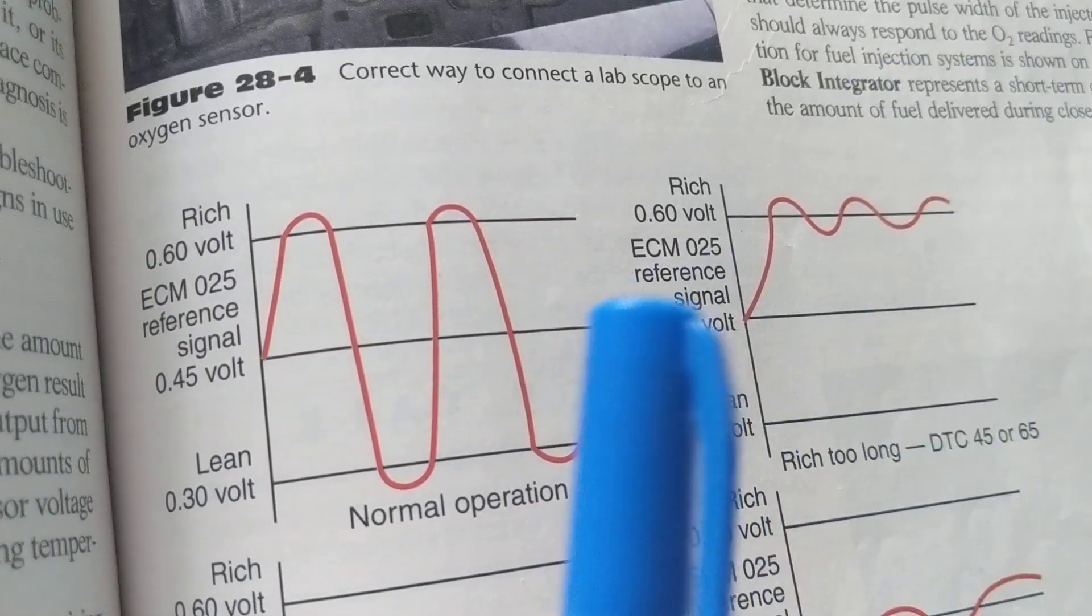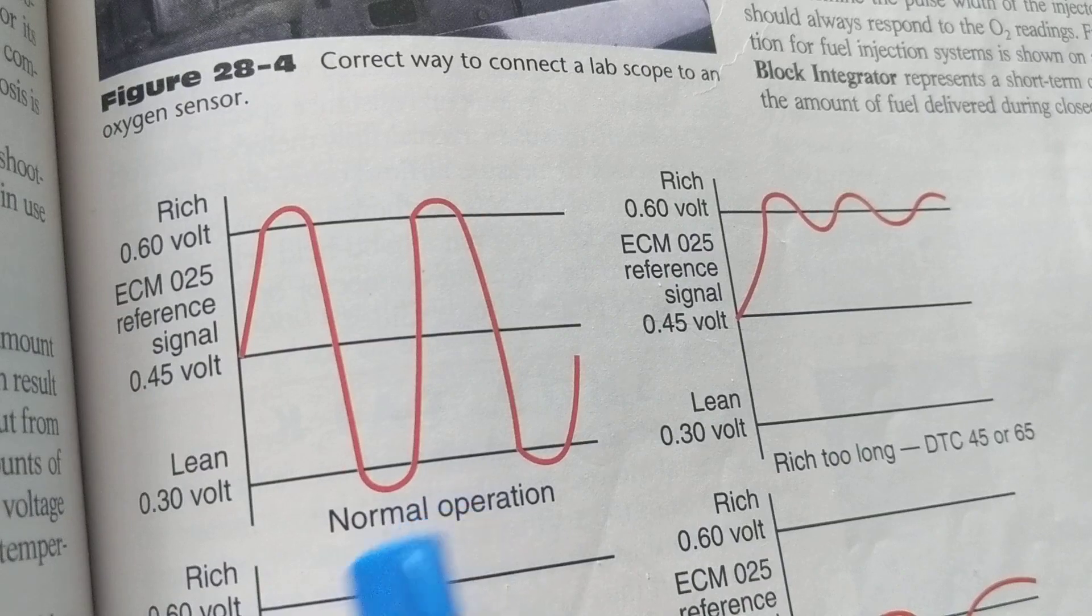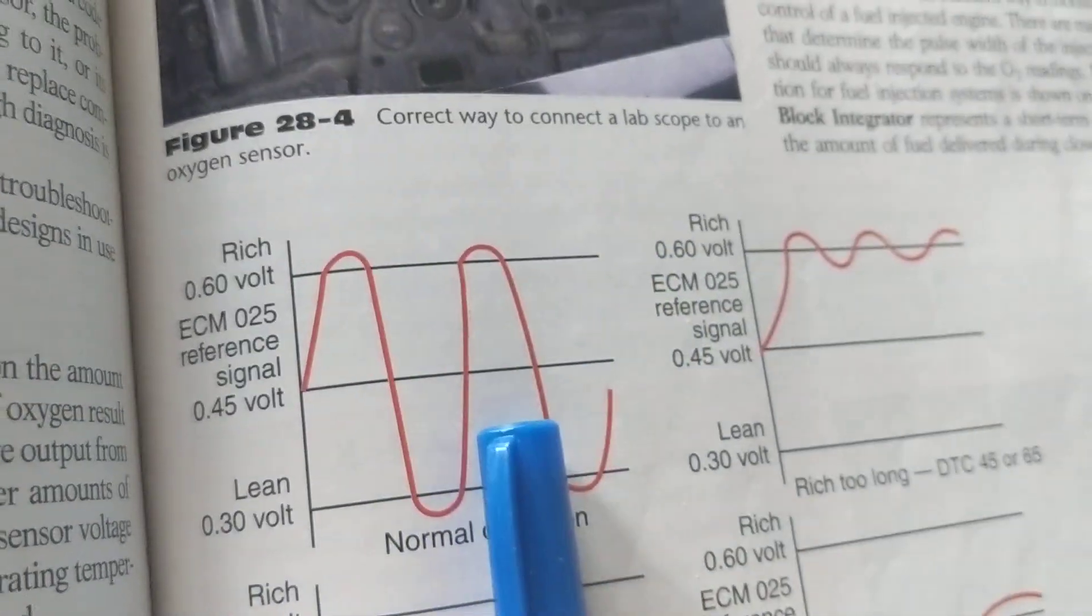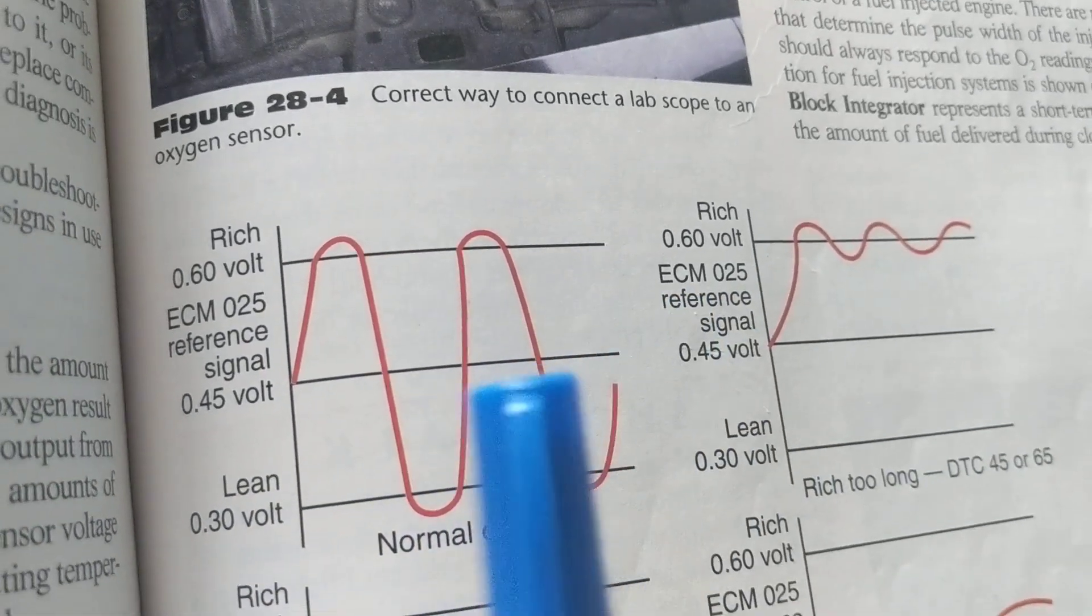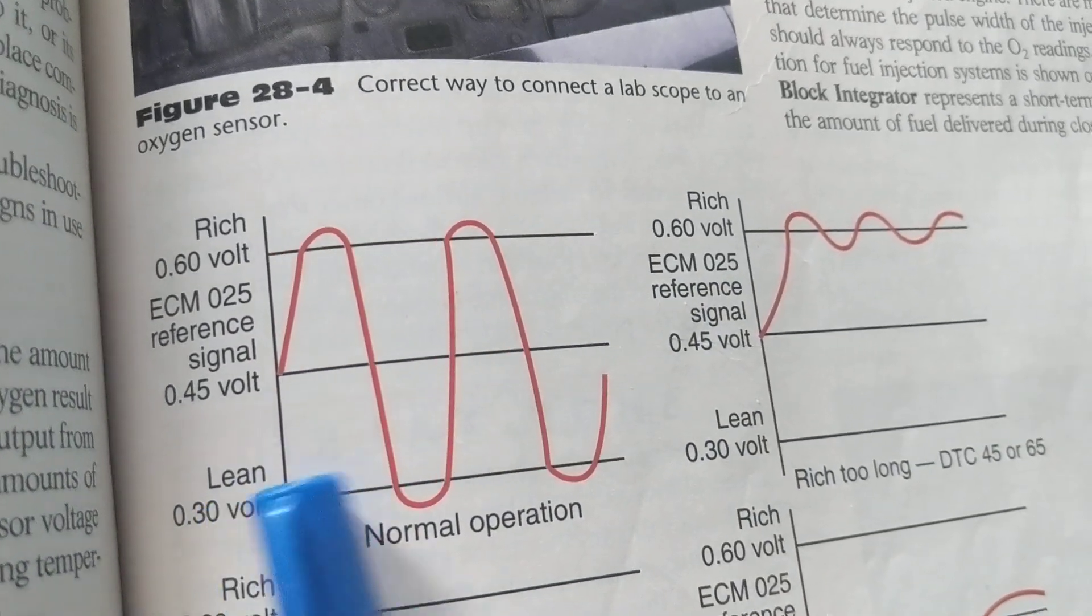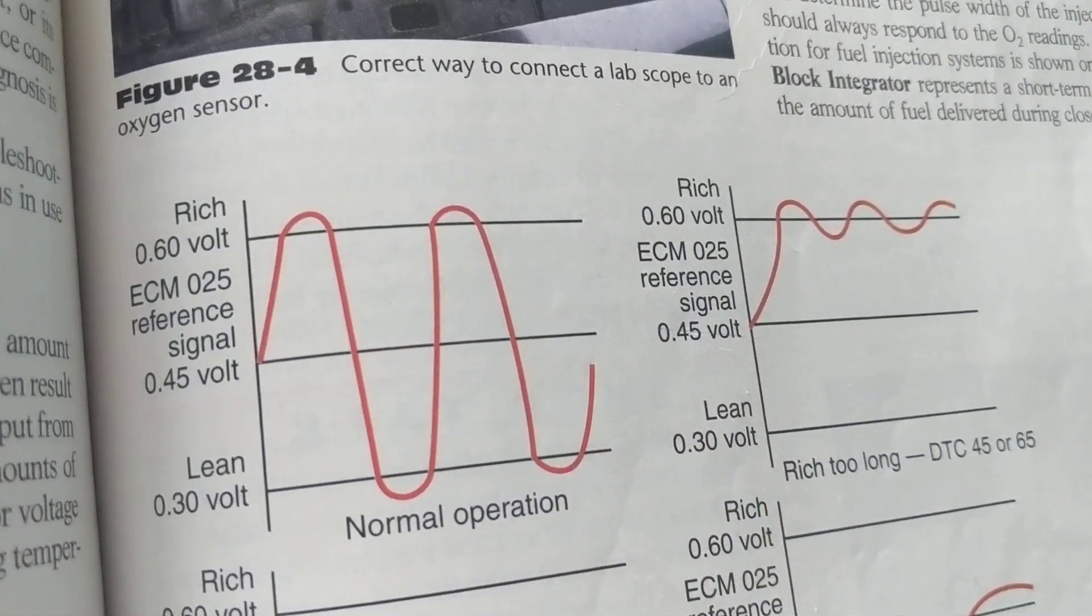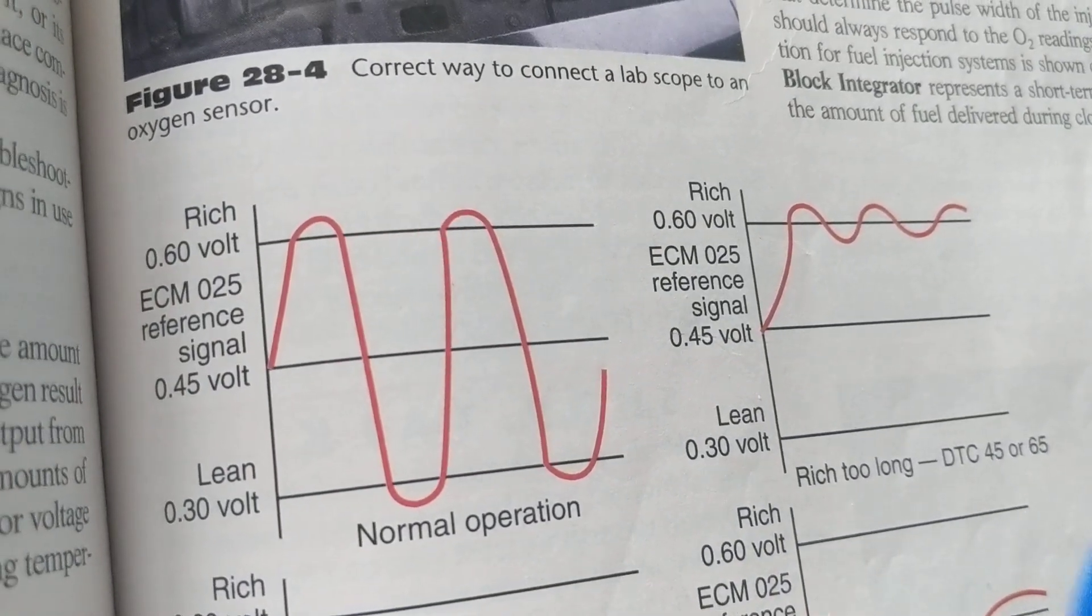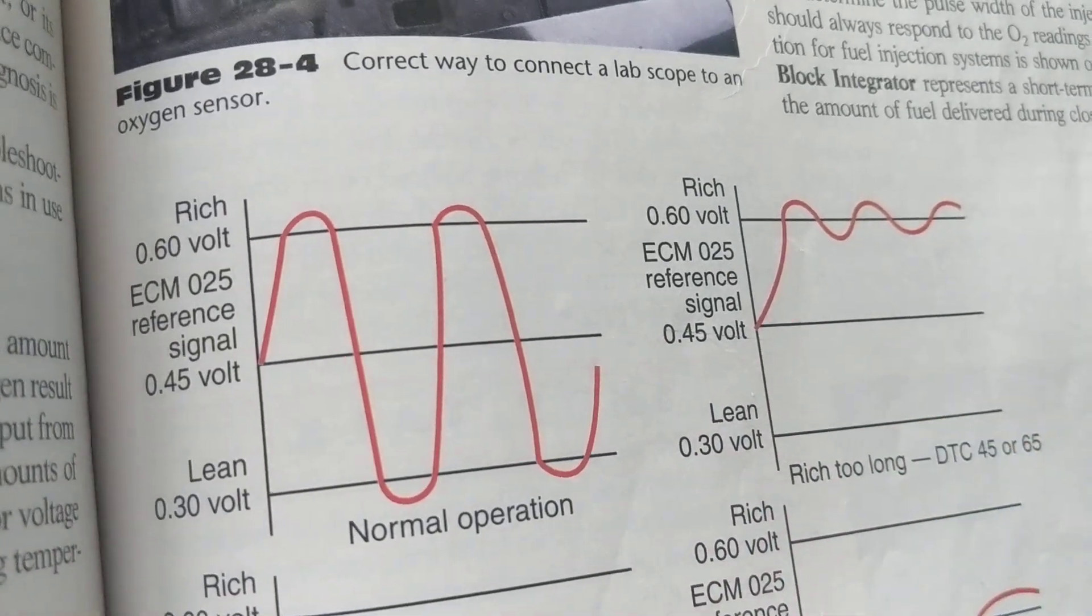Again, the computer has to correct the air-fuel mixture. In order to do that, it has to have sensors. Sensors give information to the computer. The computer says, I either have to take away fuel, or I have to give fuel according to how much. More air, more fuel. Less air, less fuel.